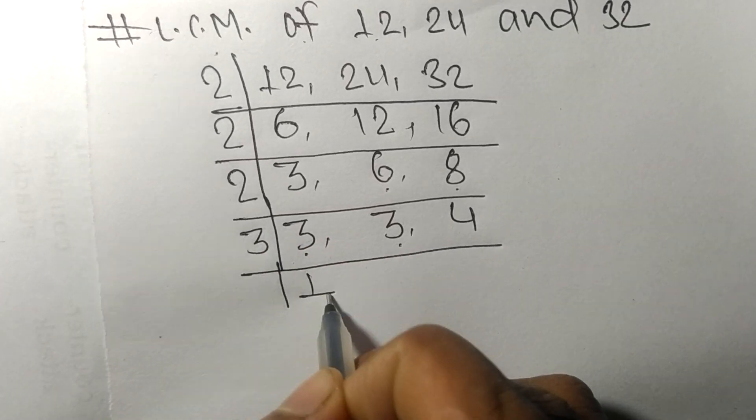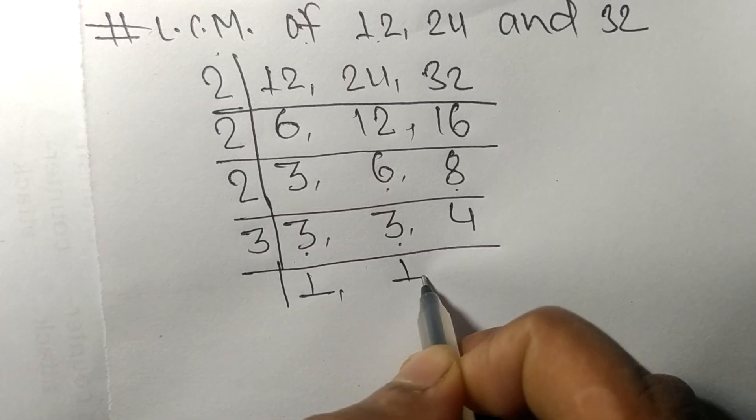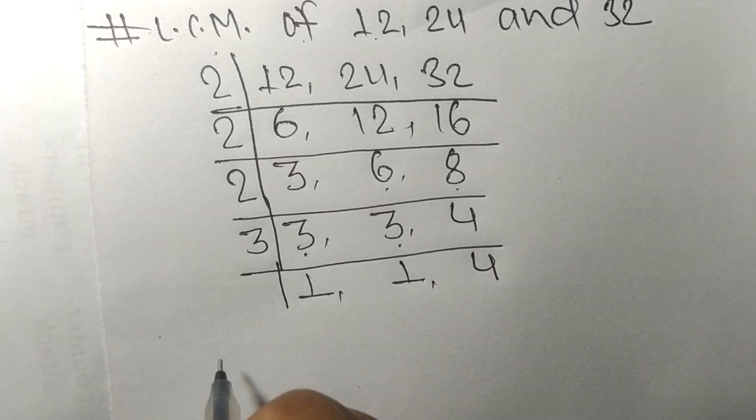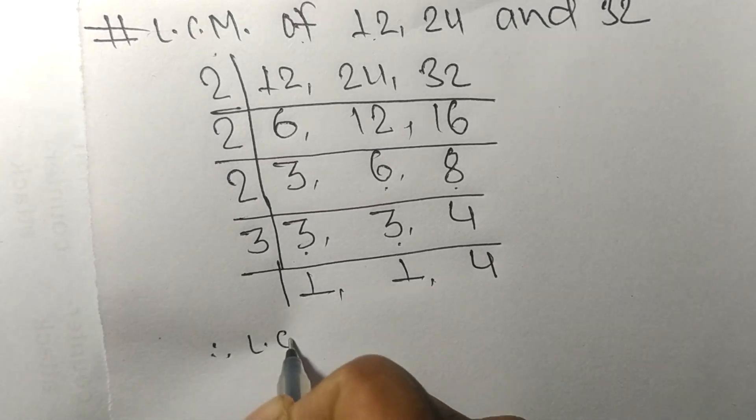So the LCM is equal to, from this side it is 2 times 2 times 2 times 3. From this side we choose the numbers greater than 1, that is 4.